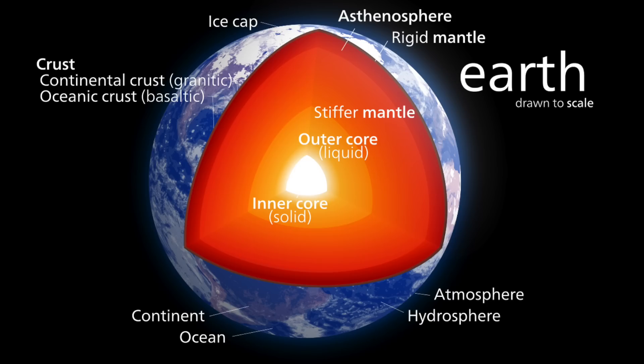The earth is divided into an inner core, mostly made of iron, and an outer part made largely of silicates. The outer part is further divided into the mantle and the skin-like cover called the crust.